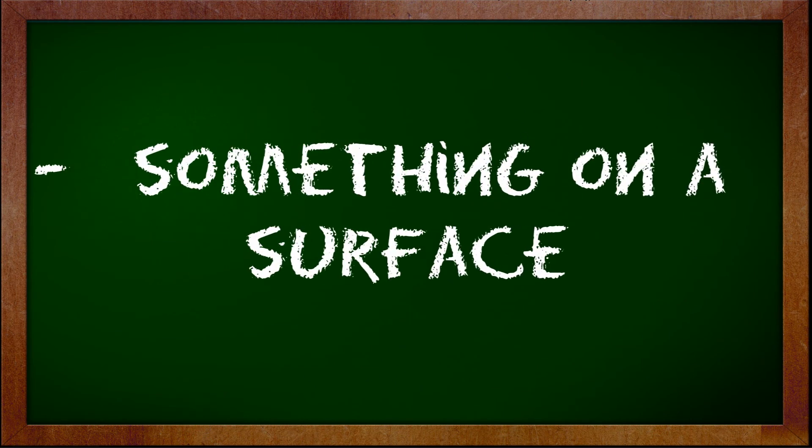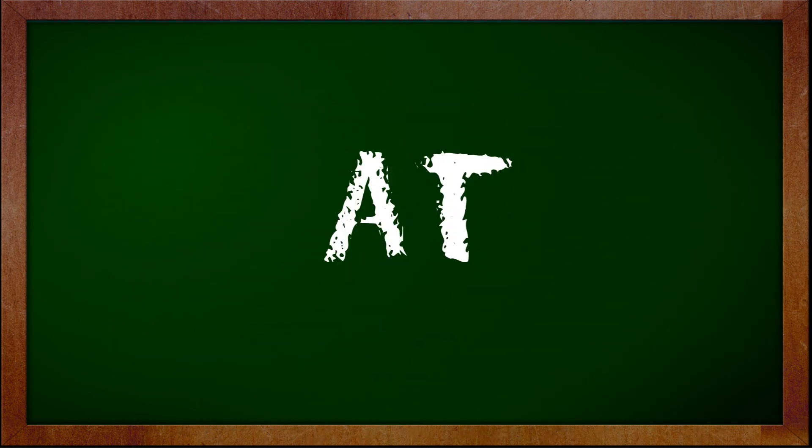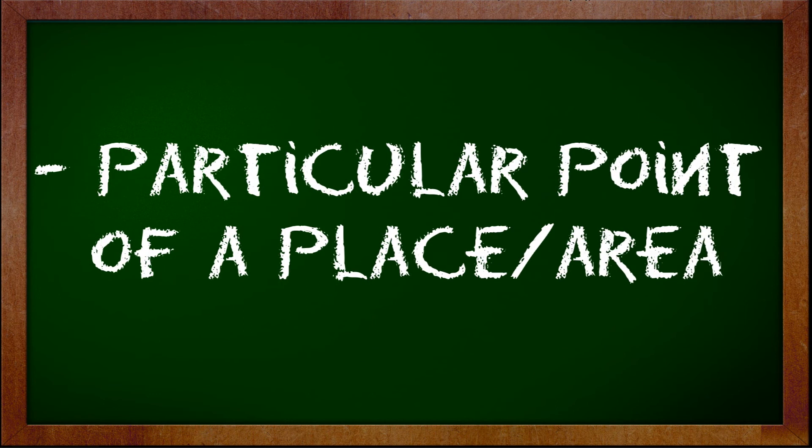Do you already know when to use the preposition on in line with place now? Again, on is used to indicate something on a surface. Let's proceed with the usage of the preposition at in line with place. Here, at is used to indicate a particular point of a place or of an area.